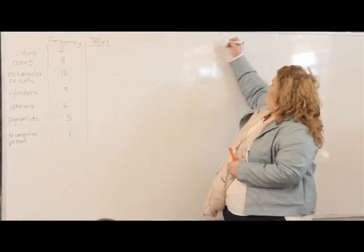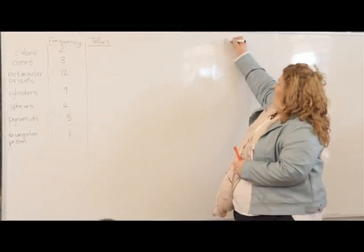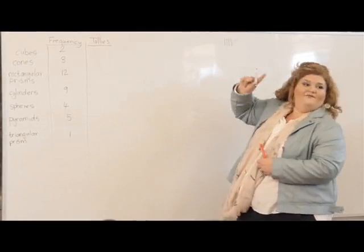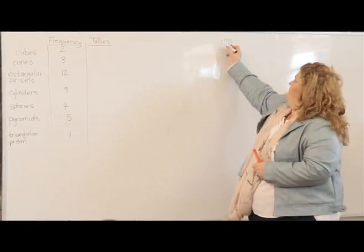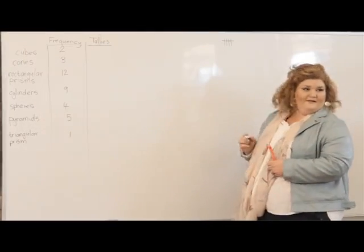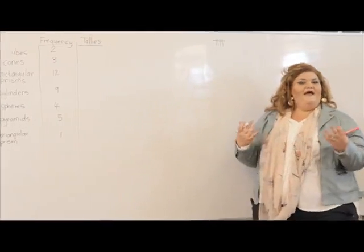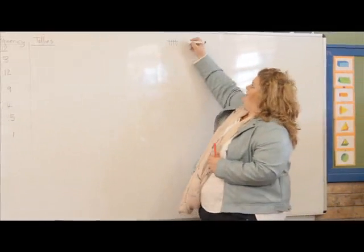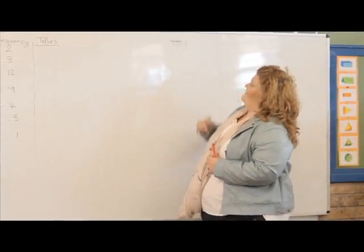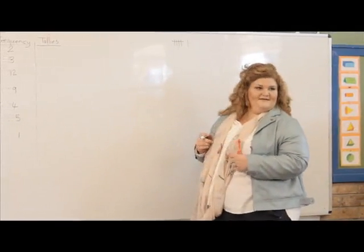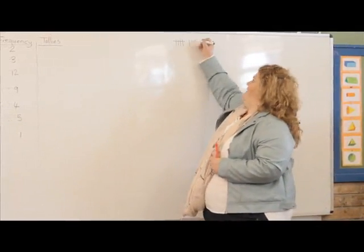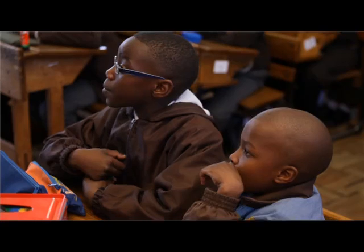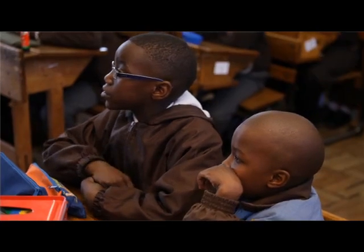It looks like this — let me remind you. One, two, three, four. The fifth one goes through the middle. So if I have to show the number six, it will look like that. The number seven — because it's five plus two — is seven. So this is the second way we can record information.